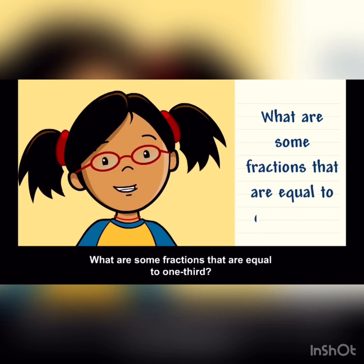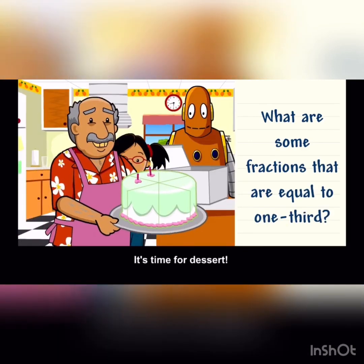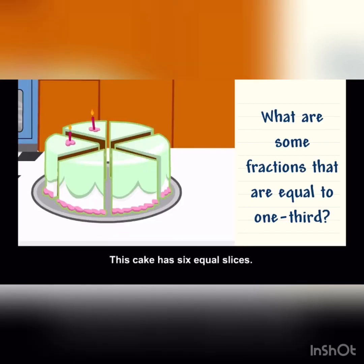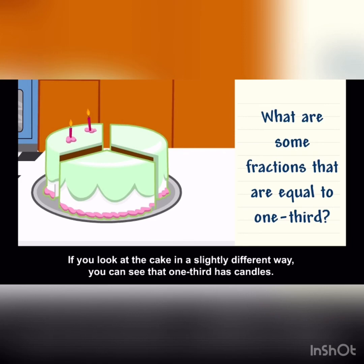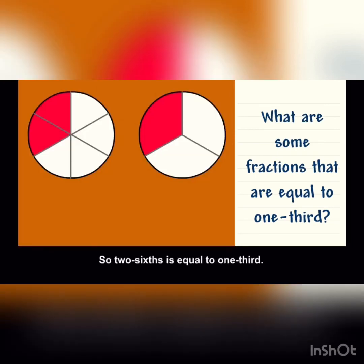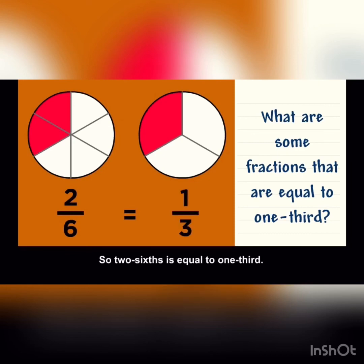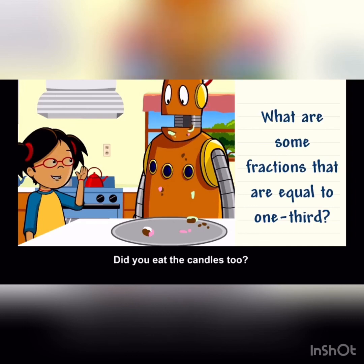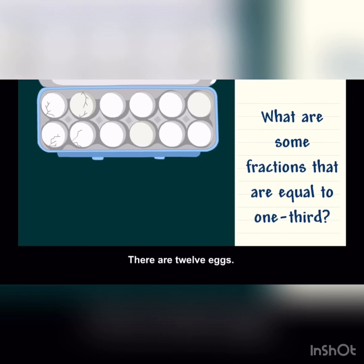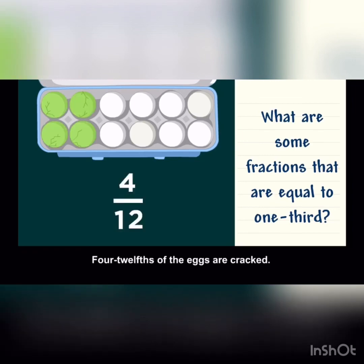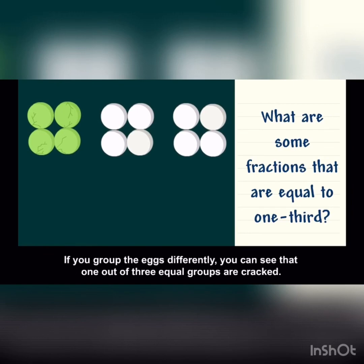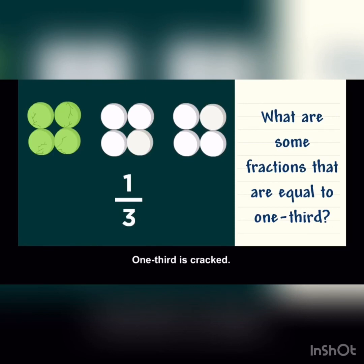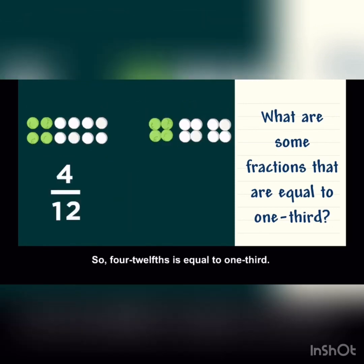What are some fractions that are equal to one third? It's time for dessert! This cake has six equal slices. Two slices have candles, so two sixths of the cake has candles. If you look at the cake in a slightly different way, you can see that one third has candles. So two sixths is equal to one third. There are twelve eggs, but four of them are cracked. Four twelfths of the eggs are cracked. If you group the eggs differently, you can see that one out of three equal groups are cracked — one third is cracked. So four twelfths is equal to one third.